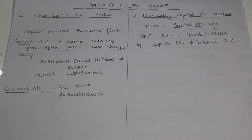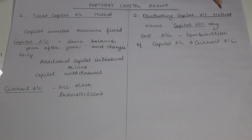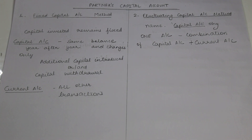In any firm, Partners Capital Account can be maintained by two methods. First one: Fixed Capital Account Method. Second one: Fluctuating Capital Account Method. The end balance will remain the same for both methods, but still there is a difference.